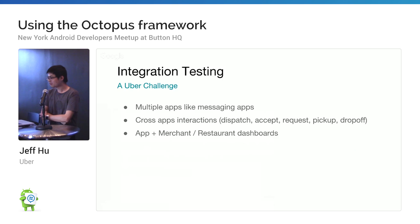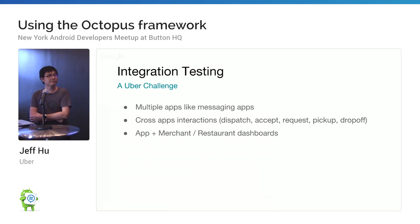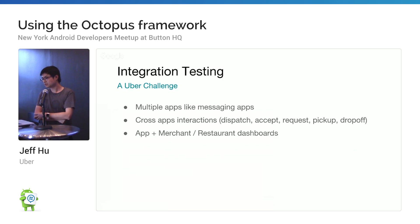At Uber we actually have a different problem. One thing is multiple apps — we have rider apps and driver apps, and they're actually talking to each other. It's like a messaging app. It's cross-app interaction, which means the driver makes a request, it gets dispatched, the rider sends a request and the driver has to accept that request and do a pickup and drop-off.